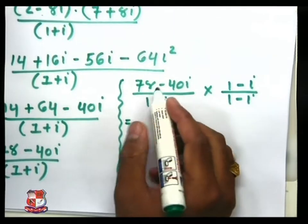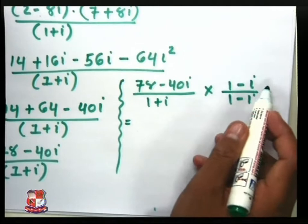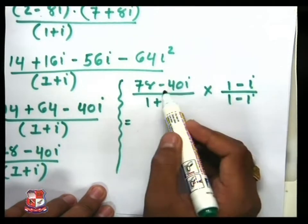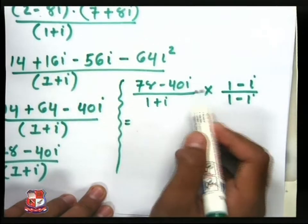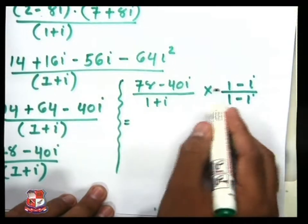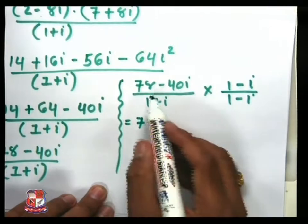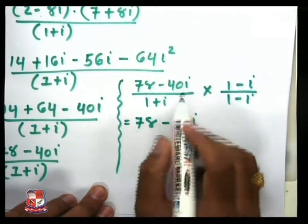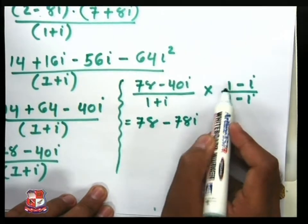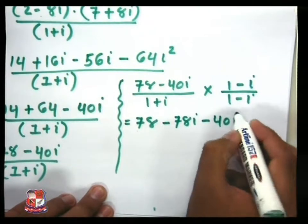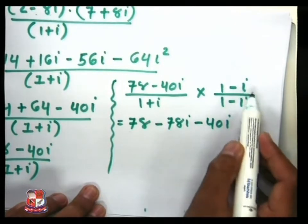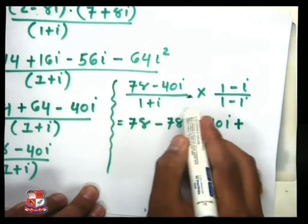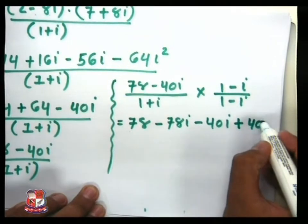If we want to multiply 78 minus 40i with 1 minus i, the result is 78 into 1, then 78 into minus i. So minus i: 78 again, minus 40i multiplied with 1, and again minus 40i multiplied with minus i. First step: 78 into 1 that becomes 78. Then 78 into minus i, so take minus first and then 78 into i. Now minus 40i multiplied with 1 gives minus 40i. Again, minus 40i multiplied with minus i — here minus and minus that becomes plus sign first: 40i and i, result is 40i squared.